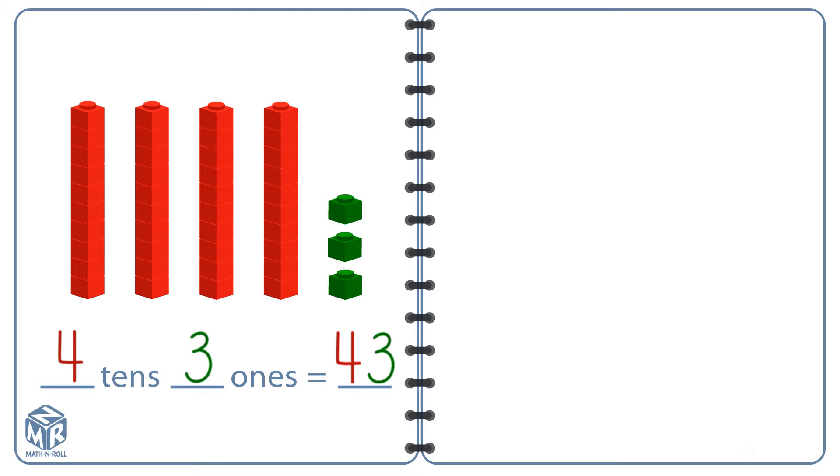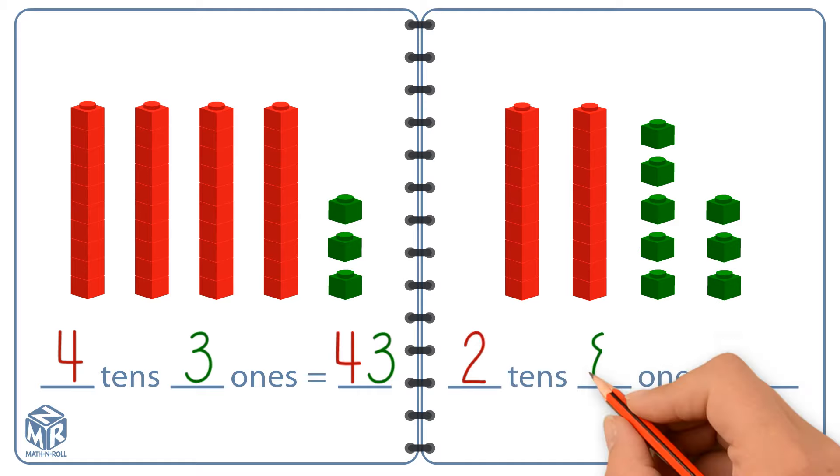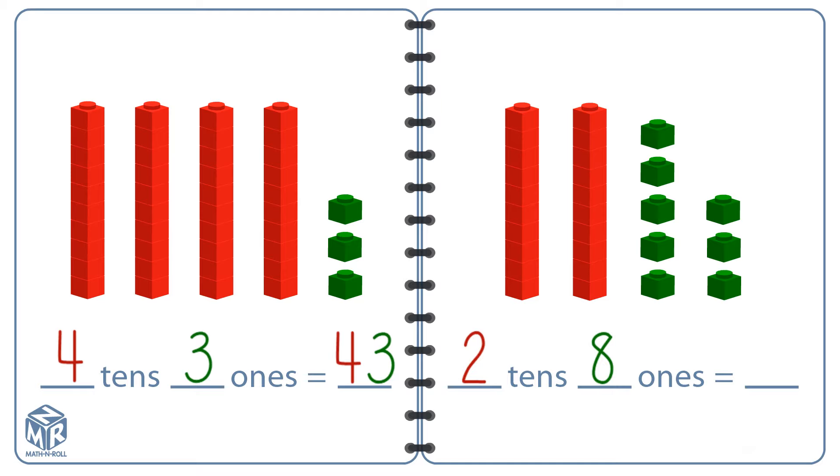Let's try another example. We have two 10s and eight 1s. We can write two 10s and eight 1s as 28.